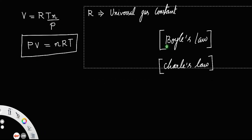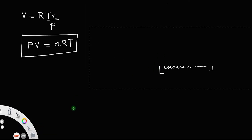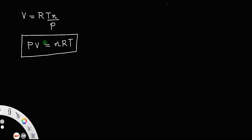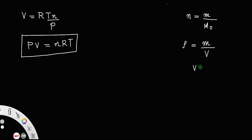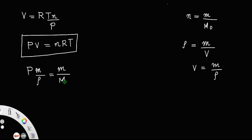Now let us discuss the different forms of the ideal gas equation. The first form is PV = nRT. The number of moles is always mass of the substance divided by its molecular mass M₀. Also, density equals mass divided by volume, so volume equals mass divided by density. Substituting both into the equation gives P × (m/ρ) = (m/M₀)RT.